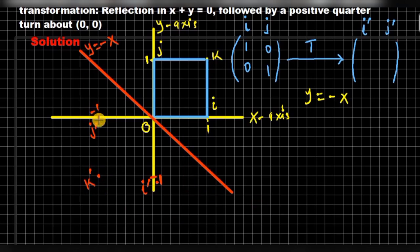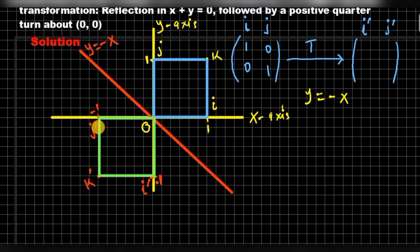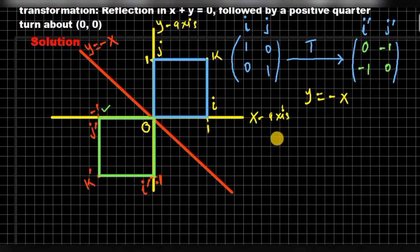Joining the vertices, we have the reflection of the unit square. We can now determine the coordinates of the image points. Beginning with i prime, we say i prime is (0, -1). And for j prime, this point is (-1, 0). Therefore, the transformation matrix representing reflection on line x plus y equals 0, or line y equals negative x, is the matrix: (0, -1; -1, 0).